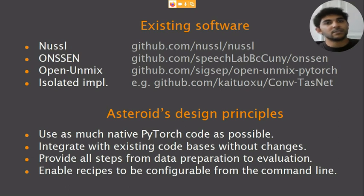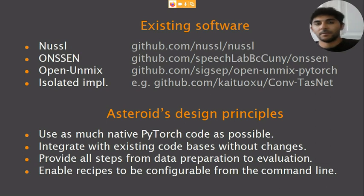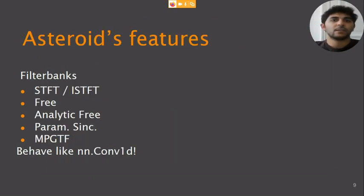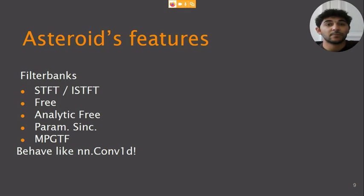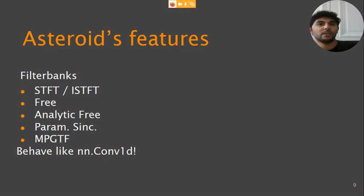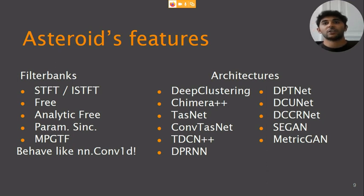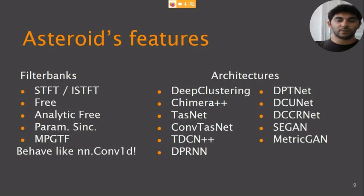Now I'll review Asteroid's current features before presenting the results we reproduced. Our starting point is the encoder-masker-decoder framework. Filter banks are the main elements of the encoder-decoder block, and we chose to make them consistent with nn.Conv1d, the 1D convolution layer from PyTorch, so that the user will be familiar with it. On the other side, we have the masker architectures, which are doing the actual separation, and we support quite a large range of those from the literature.